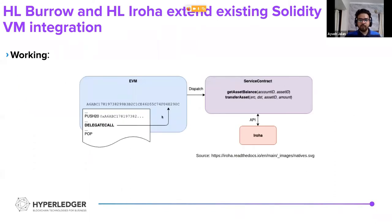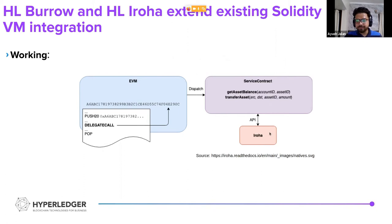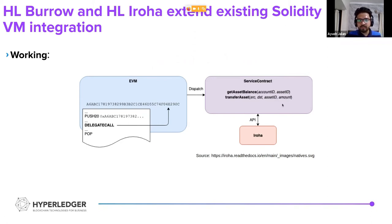I will give you a brief overview of how the integration works. The integration introduces what we call a service contract inside Burrow, which is aware of the Iroha model. This service contract exposes multiple APIs which are capable of interacting with the Iroha blockchain state. This service contract is then deployed on an Ethereum virtual machine. The contract cannot be accessed without the use of Iroha, as it is specifically made for use with Iroha.